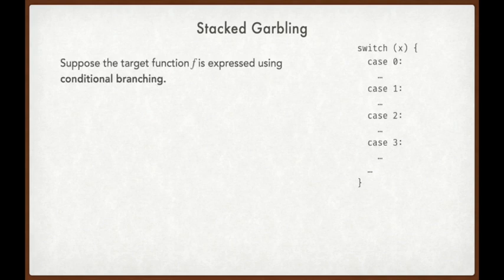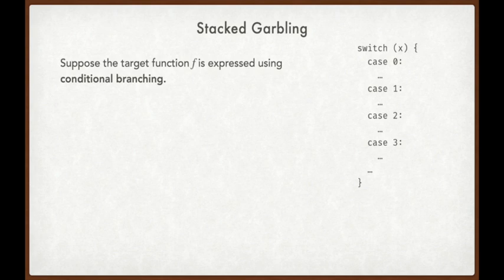Stacked garbling is a technique that helps to relieve this bottleneck. Suppose that the target function f is expressed using conditional branching. For example, on the right, I have a piece of perhaps C code that uses a switch statement. The crucial property is that there must be some branches of the code whose behavior is completely conditional — that is, only one of the branches is actually going to be taken. The key idea of stacked garbling is that since only one branch is actually evaluated, we don't care whether or not any of the inactive branches are evaluated correctly. We only care that the single active branch is evaluated correctly.